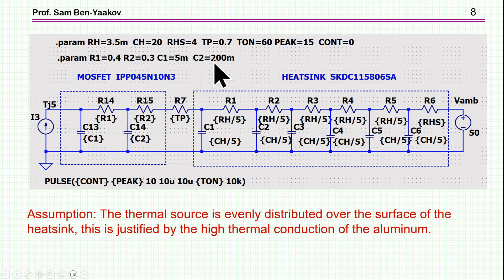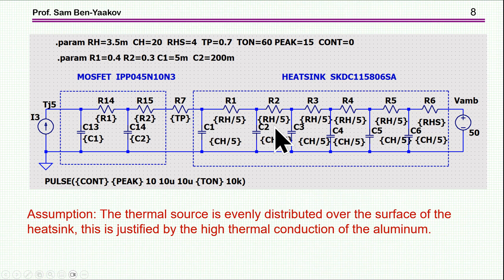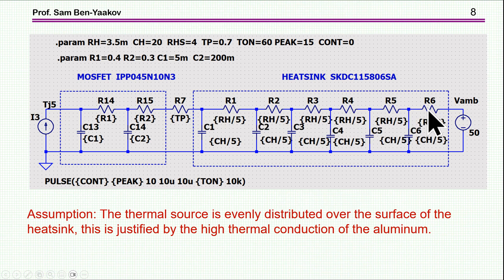The total capacitance is 200 plus 5, equaling 205 millifarad. The thermal pad is assumed to be 0.7°C/W. Here is the heatsink with two sections: the aluminum itself, and the interface between the heatsink and air. This is the major thermal resistance because aluminum has a very low thermal resistance. The resistance between the heatsink and air is 4°C/W.